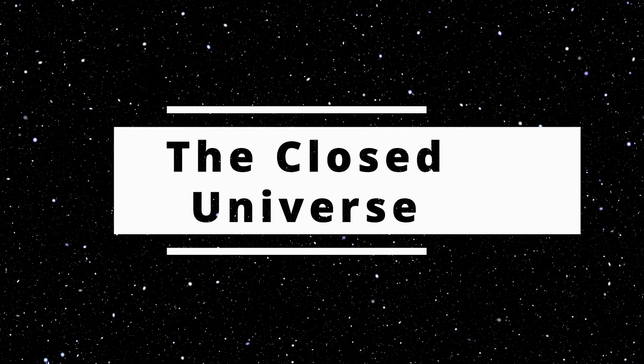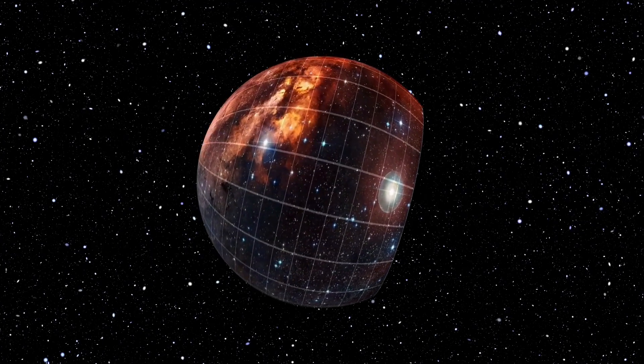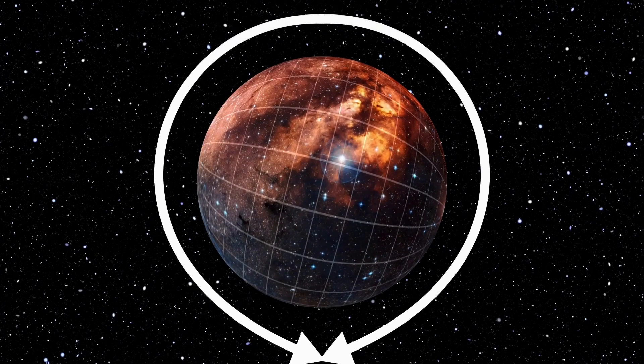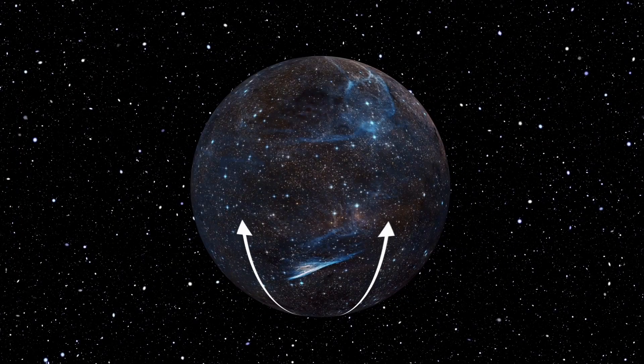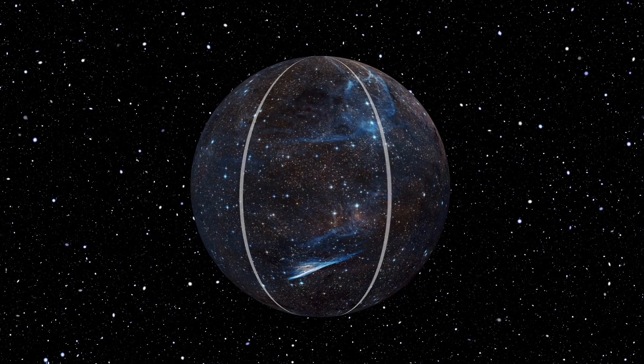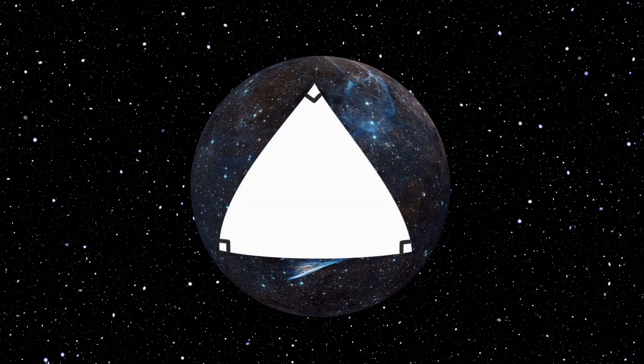The Closed Universe. This universe has a positive curvature, which means it has a closed shape, such as a sphere. Two initially parallel lines will slightly diverge, but then eventually cross, and the sum of angles in a triangle will always be greater than 180 degrees.